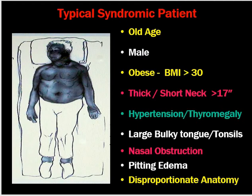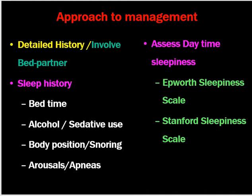The typical syndromic patient is an older obese male with BMI more than 30, a thick short neck of more than 17 inches, hypothyroidism, large bulky tongue or tonsils, nasal obstruction from anatomical causes like deviated nasal septum or nasal polyps or inflammation, pitting edema of the legs possibly from hypothyroidism, and disproportionate anatomy of the body.